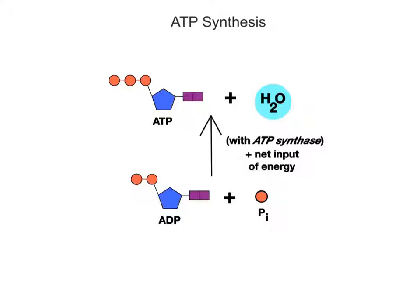ATP can also be regenerated through a dehydration synthesis reaction involving a net input of energy. This energy comes mostly from the breakdown of foods like glucose via cellular respiration. The ATP synthesis reaction is basically the reverse of ATP hydrolysis. In this reaction, catalyzed by the enzyme ATP synthase, ADP combines with a free phosphate group and a net input of energy, yielding one molecule of ATP and one water molecule as products.